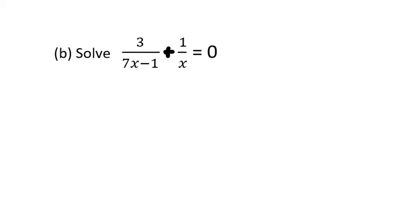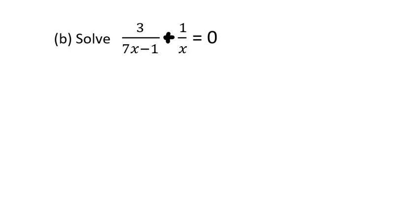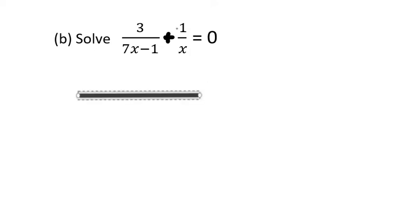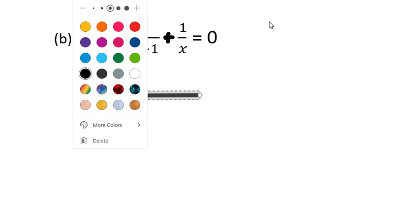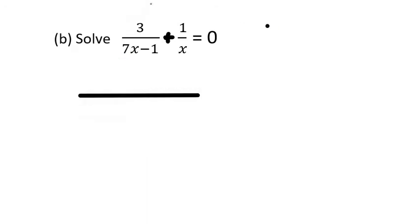Looking at the next problem: we have 3 divided by 7x minus 1, plus 1 over x, equals 0. There are several ways we can do that. Let's find the LCM and add the two fractions.